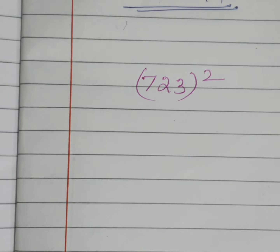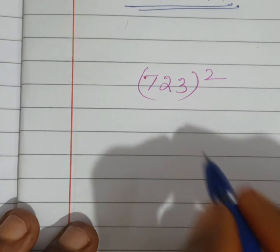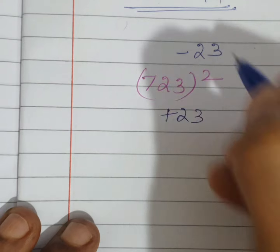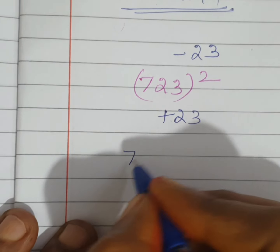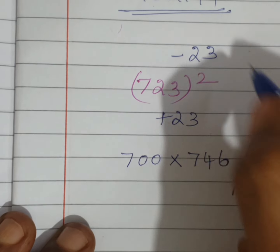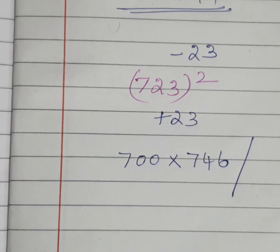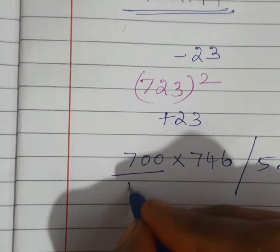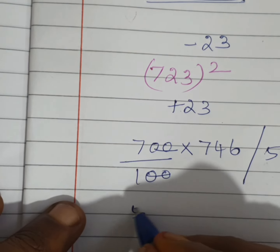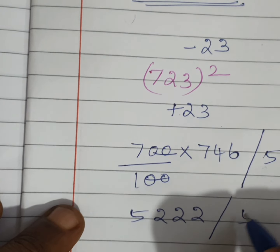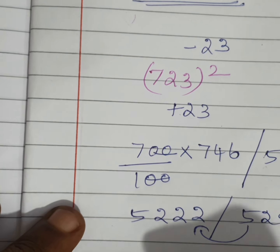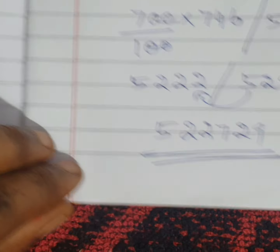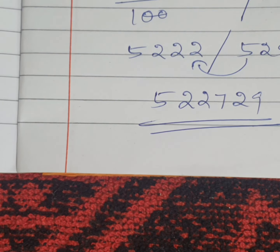Now 723 square. This is greater than 700 by 23, so plus 23 and minus 23. We get 700 into 746 and 23 square. As we know how to find squares from 1 to 100, use the trick to find 23 square, which is 529. Dividing by 100, 7 into 746 is 5222. Adding the carryover 5, we get 522729.